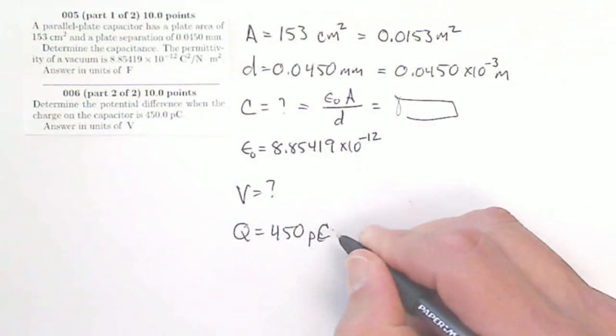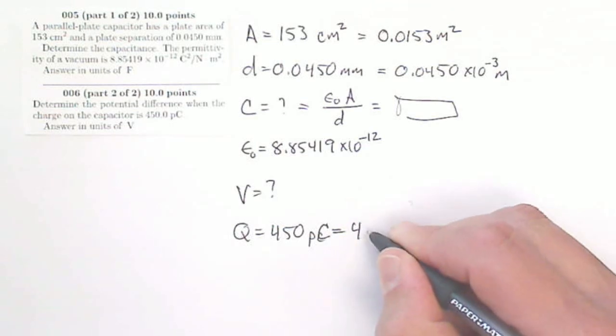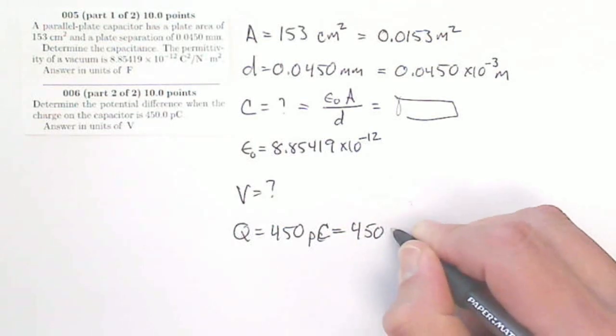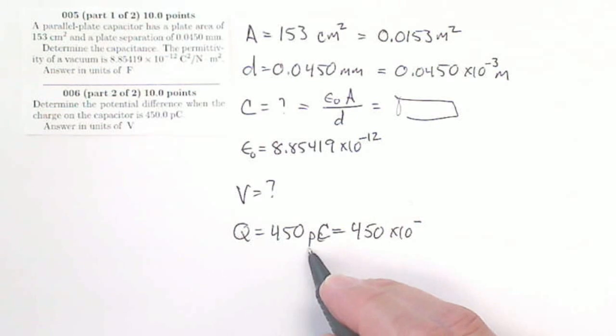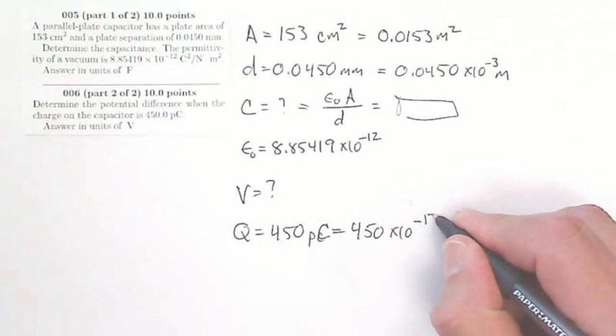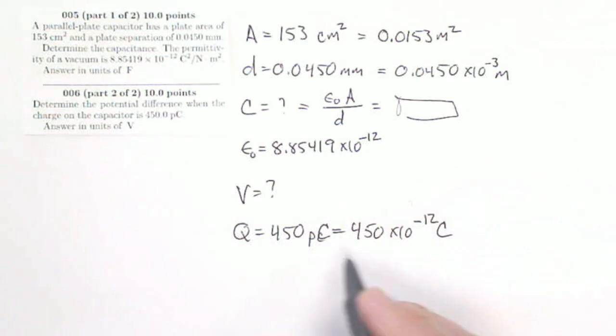Now, picocoulombs means times 10 to the minus, let's see, 450 times 10 to the minus, well, nano is 9, this is 12, 10 to the minus 12 coulombs. So now I've got a Q,